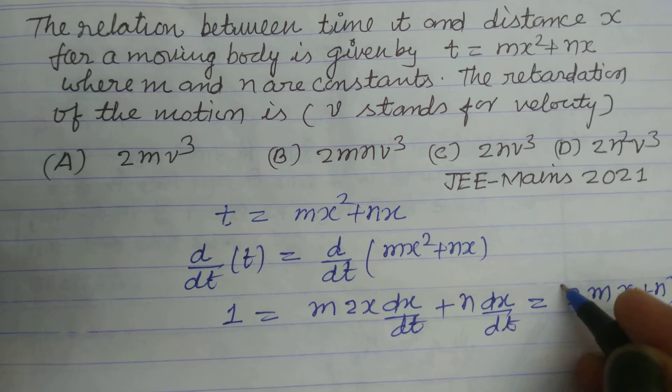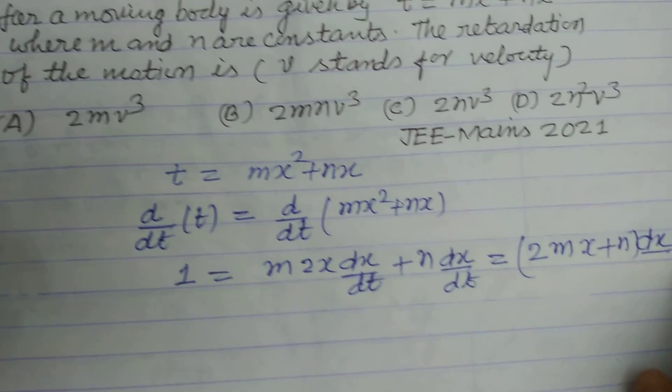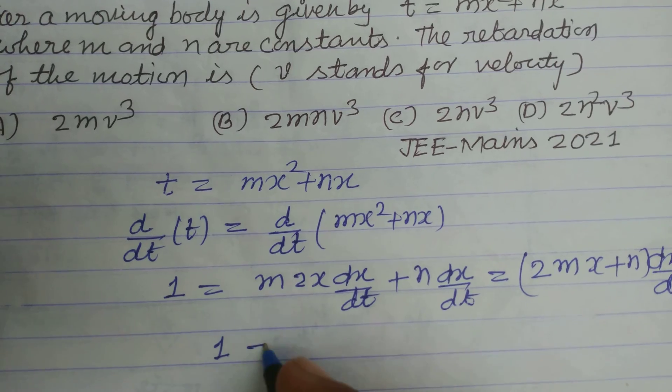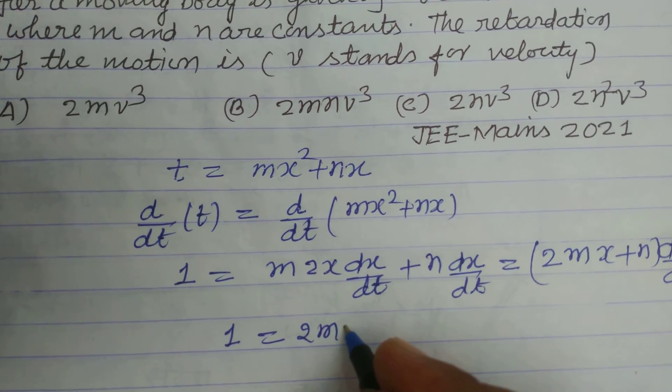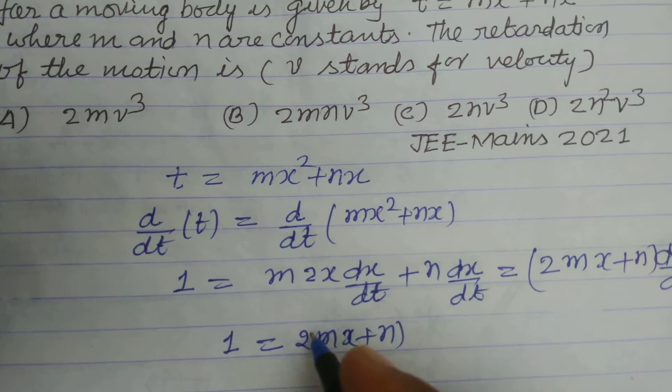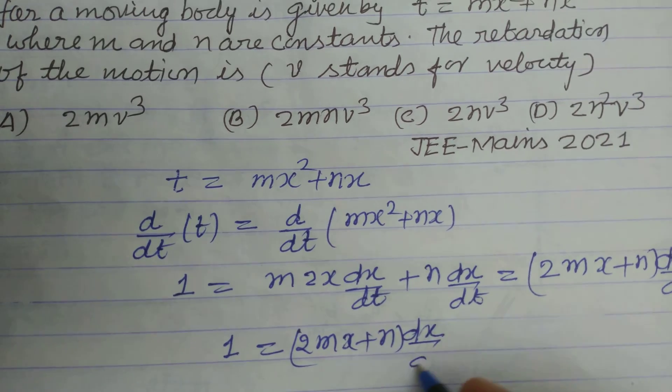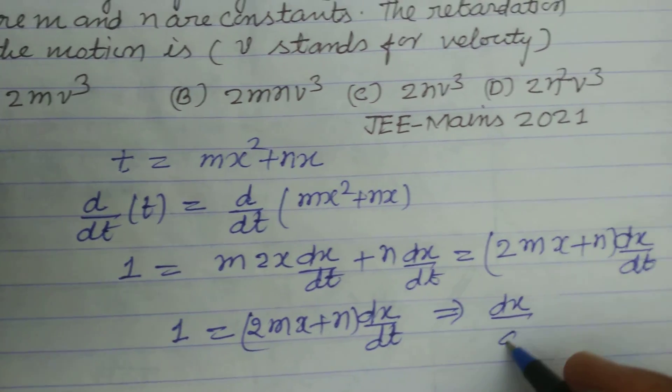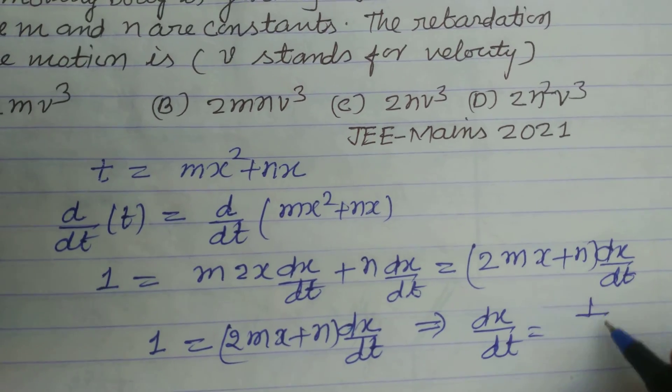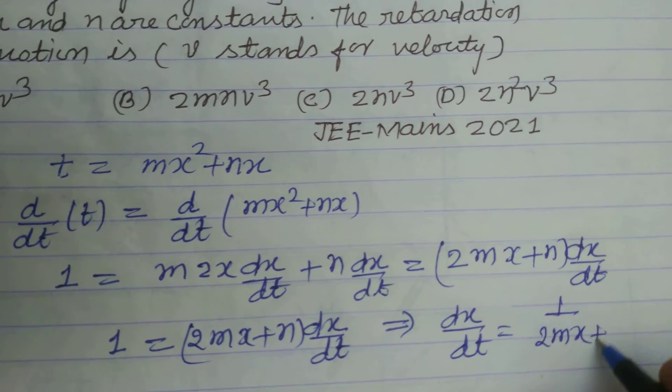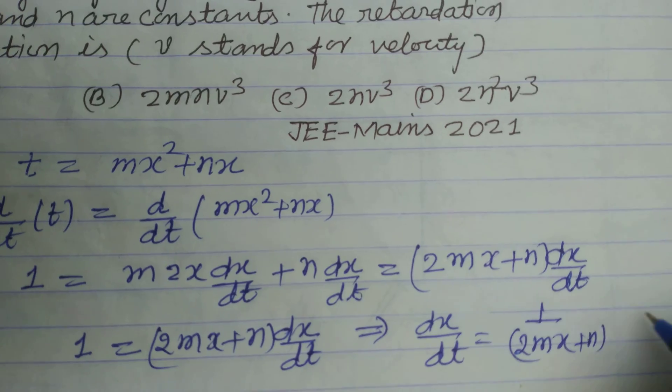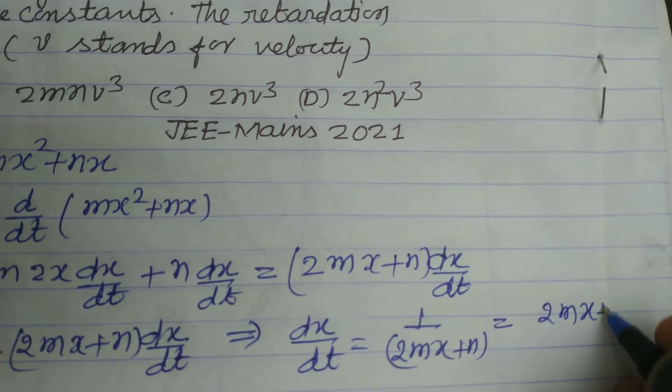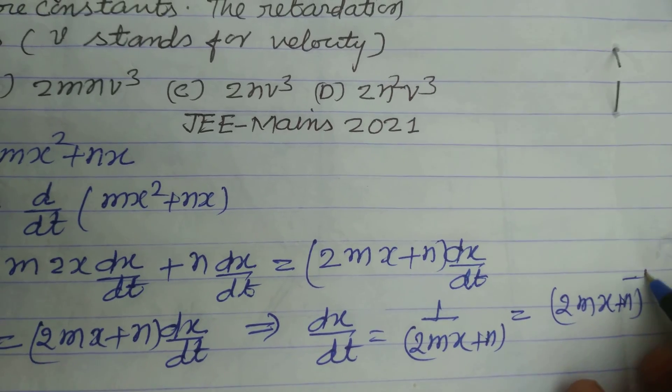So 1 = (2mx + n)(dx/dt). Therefore, dx/dt = 1/(2mx + n), or we can write it as (2mx + n)^(-1).